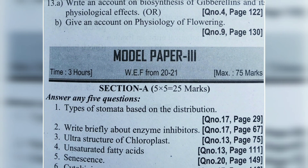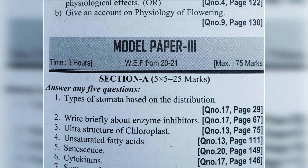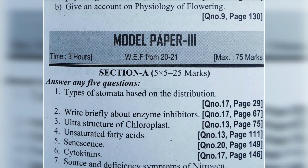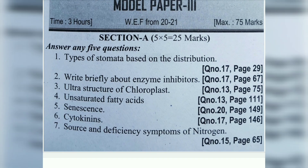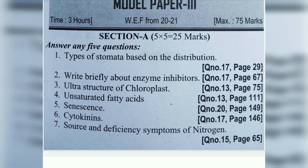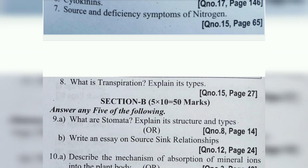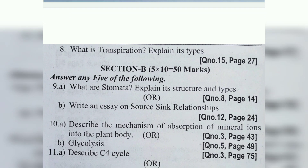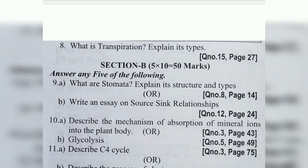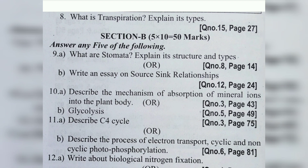Model Paper 3 Section A short questions: types of stomata based on distribution, write briefly about enzyme inhibitors, ultrastructure of chloroplast, unsaturated fatty acids, senescence, cytokinin, source and deficiency symptoms of nitrogen. Question 5 from Model Paper 1 is a repeater - what is transpiration, explain its types. Question 6b: write an essay on source-sink relationship. Questions 9a and 9b will have clear explanations in video links in the description.